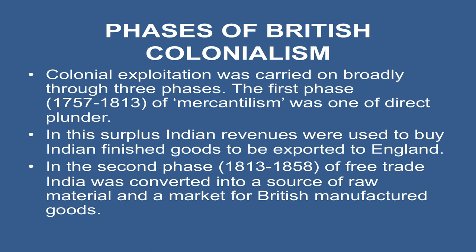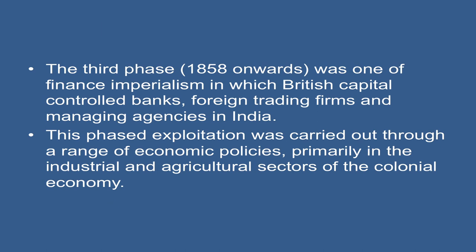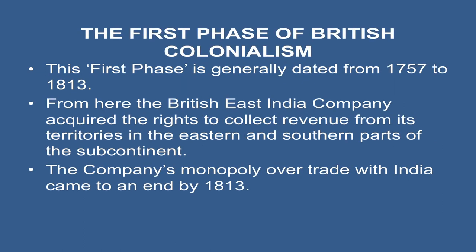The first phase, from 1757 to 1813, of mercantilism was one of direct plunder, in which surplus Indian revenues were used to buy Indian finished goods to be exported to England. In the second phase, between 1813 to 1858, of free trade, India was converted into a source of raw material and a market for British manufactured goods. The third phase, from 1858 onwards, was one of finance imperialism, in which British capital controlled banks, foreign trading firms, and managing agencies in India.